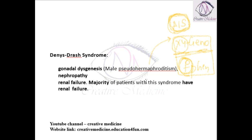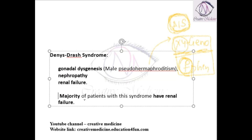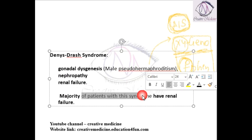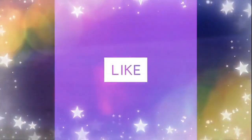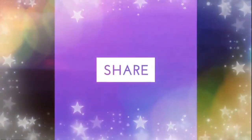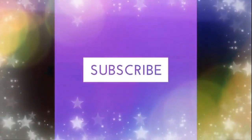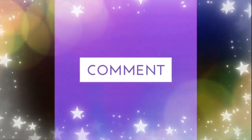Gonadal dysgenesis is seen in Dennis Drash syndrome along with nephropathy and renal failure. The majority of patients with this syndrome will have renal failure. Thank you for watching.